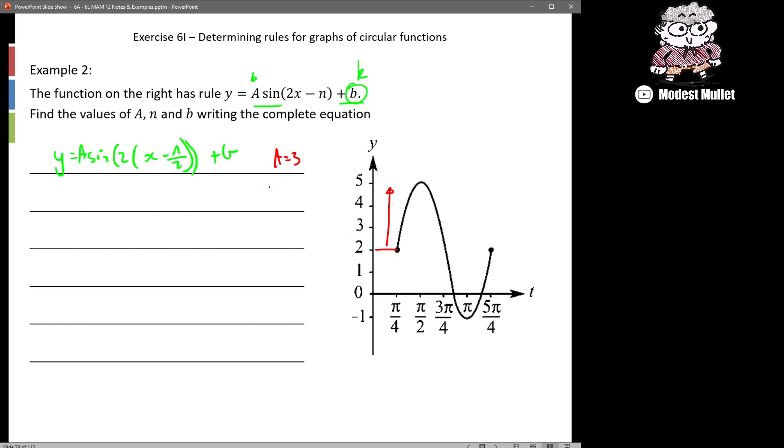My vertical translation or b which we're used to as k, we can see our centre point has been translated up 2. So that's b.